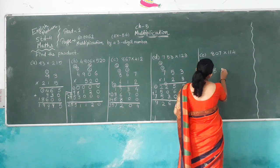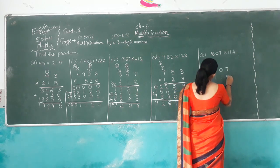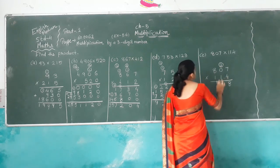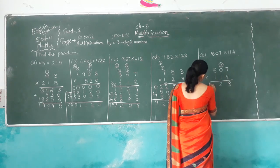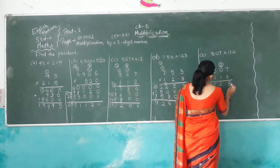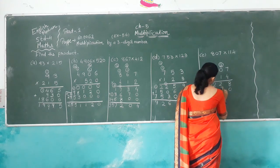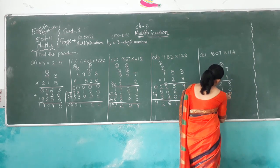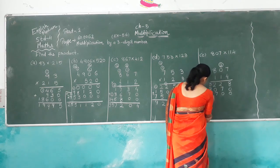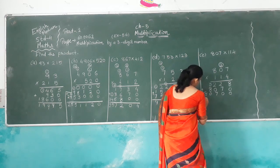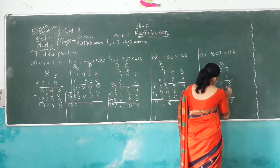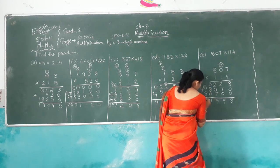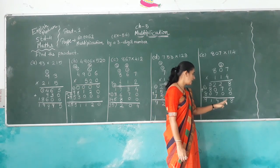Another one: 8,100 multiplied by 114. Ones place: 4 times 7 is 28, carry 2. 4 times 0 is 0, plus 2 is 2. 4 times 8 is 32. Tens place — keep 1, 0. 1 times 7 is 7, 1 times 0 is 0, 1 times 8 is 8. Hundreds place — keep 2 zeros. 1 times 7 is 7, 1 times 0 is 0, 1 times 8 is 8. Add all together: 8, 7 plus 2 is 9, 7 plus 2 is 9, then 8 plus 9 is 10 carry 1, 8 plus 0 plus 1 is 9. So answer is 924,900.